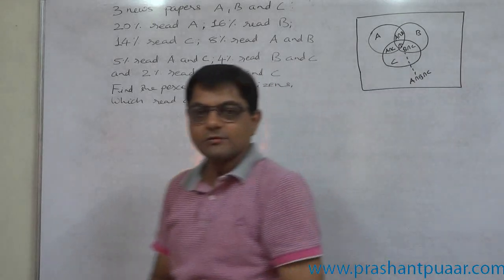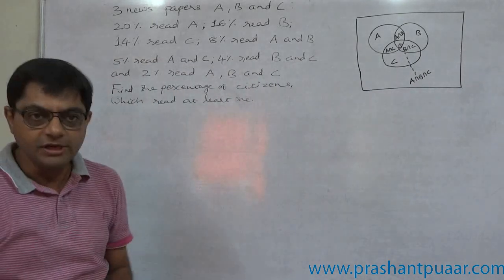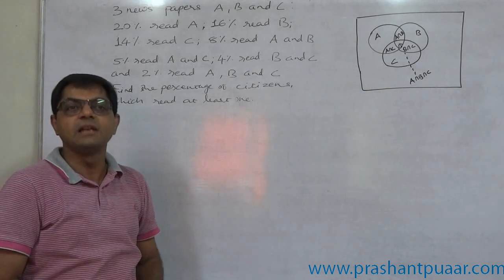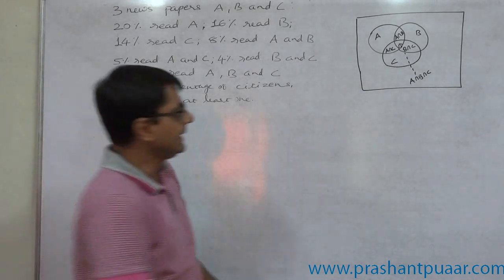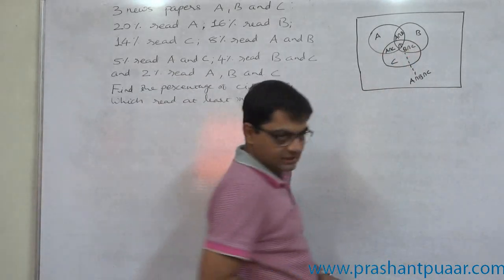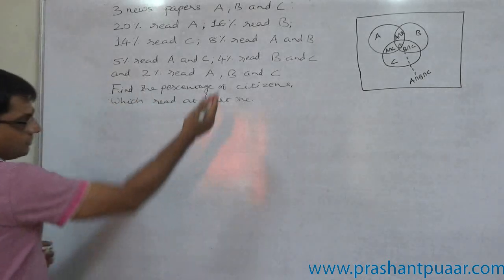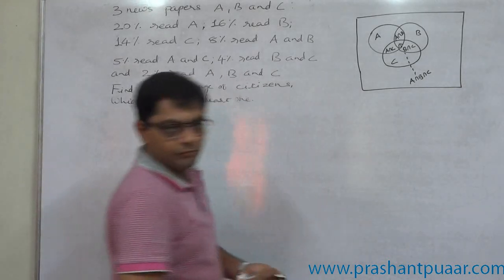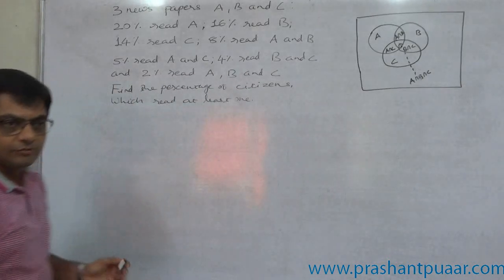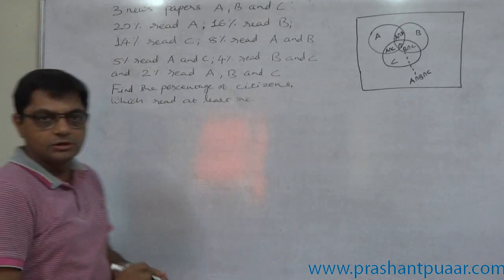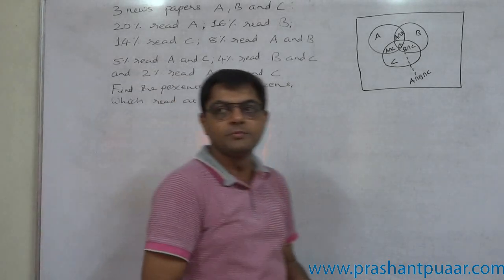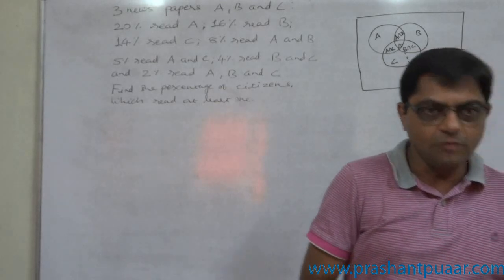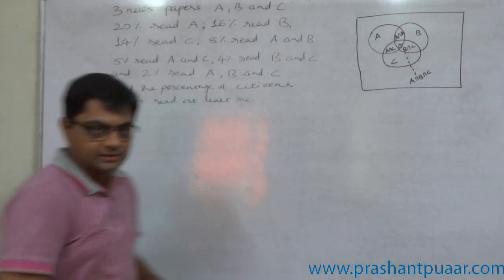At least one is the case of union — but this is the case of union of three events: A union B union C. See the Venn diagram. We are going to derive the formula, which is nothing but the logical extension of the general law of addition of probabilities for two events.